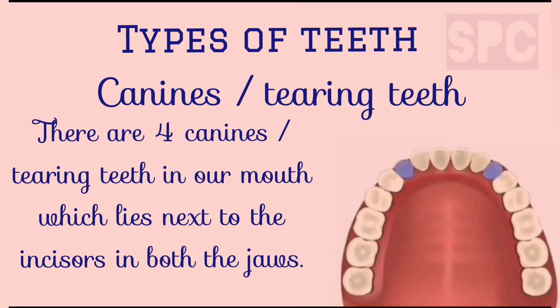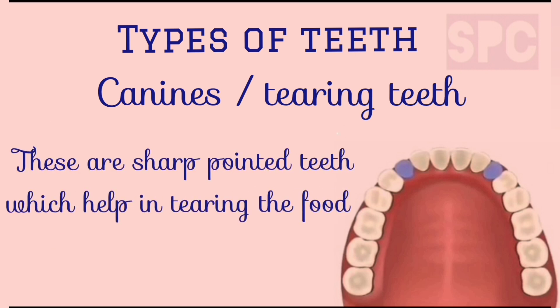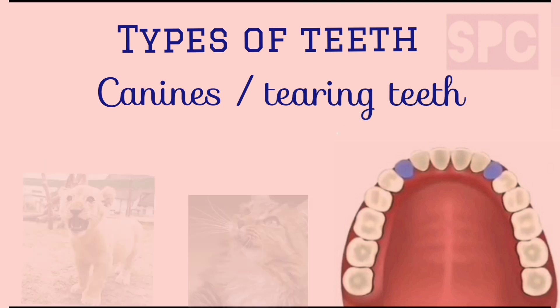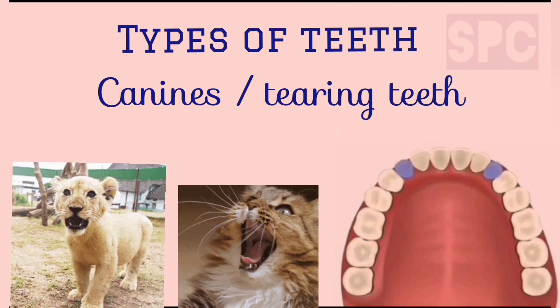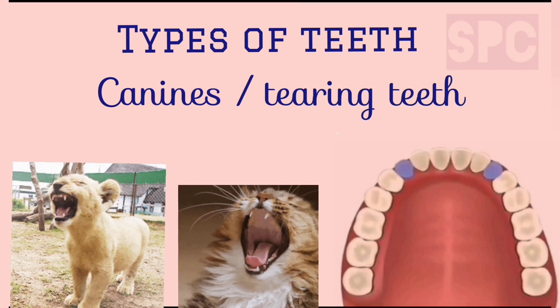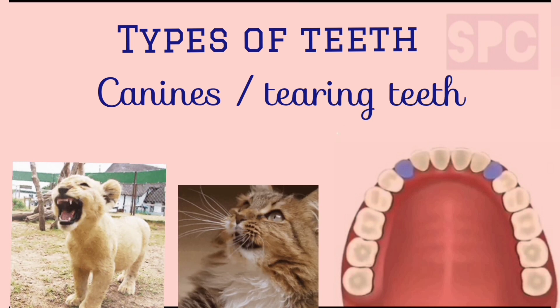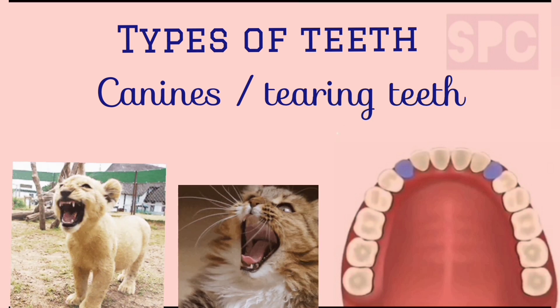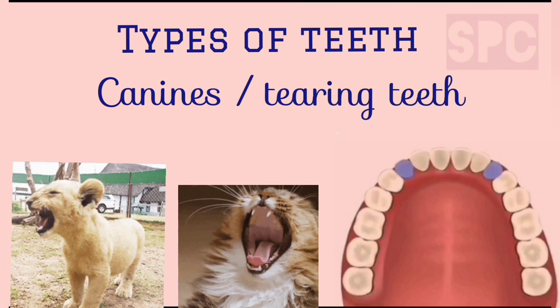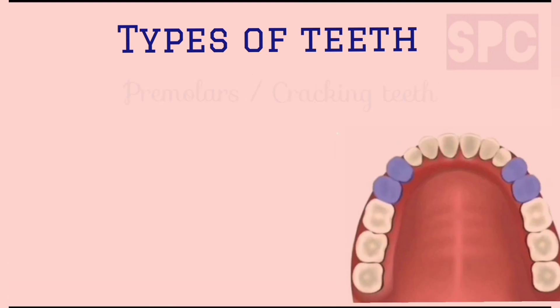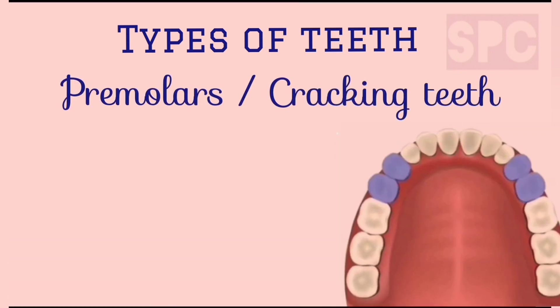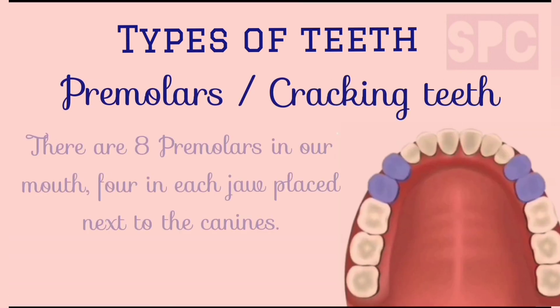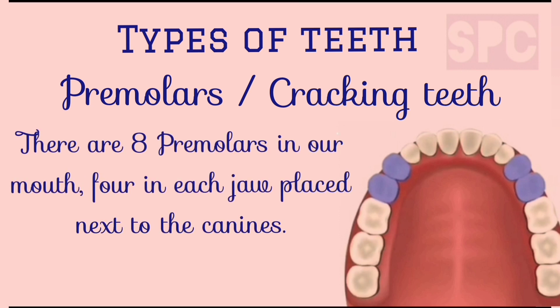Second are canines, or tearing teeth. There are four canines in our mouth, lying next to the incisors — one on each side in each jaw. These are sharp pointed teeth which help us in tearing the food. Carnivorous animals like lion, tiger, and even cats have sharp pointed canines which help them tear flesh easily.